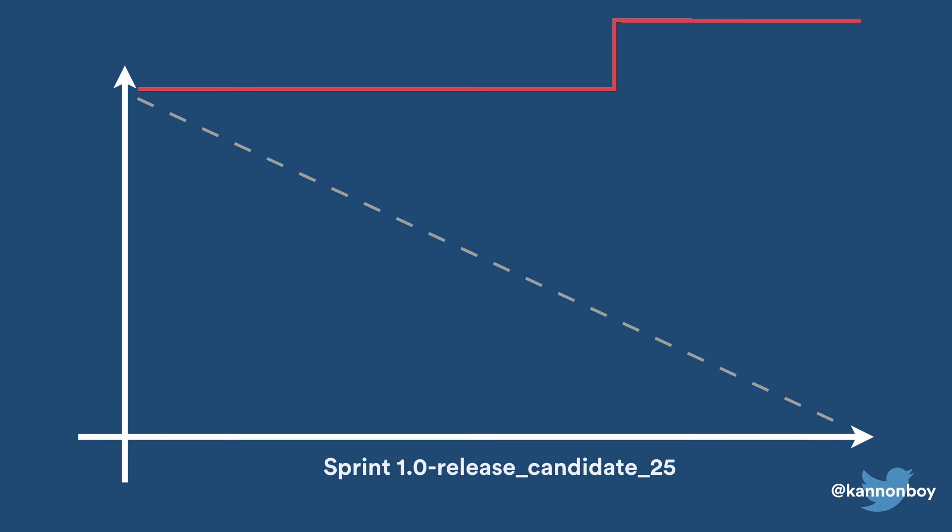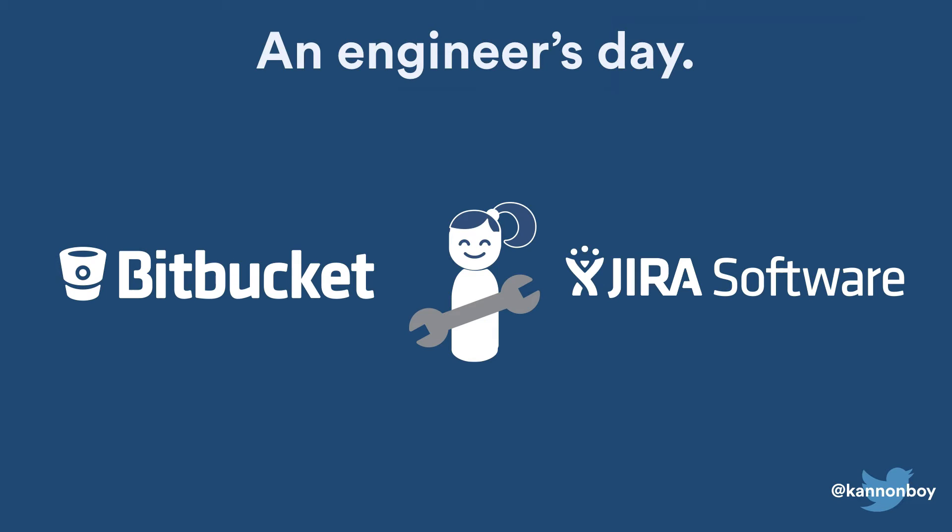This doesn't mean that your developers are sitting idle and not writing code. In fact, usually a sprint like this means your developers are working exceptionally hard — so hard, in fact, that they forgot to update Jira in between committing large volumes of code. To explain this phenomenon, let's look at a typical engineer's day.